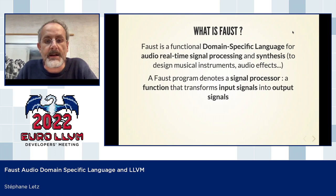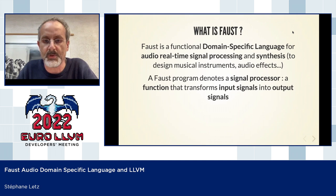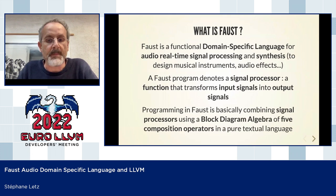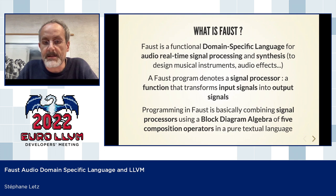Signals can also be control signals with a specific value at a specific point in time. A Faust program describes the signal processor — the mapping and transformation of input signals into output signals. This is done in Faust using a block diagram algebra of five main composition operators. It's a pure textual language, so as a programmer you describe a block diagram using this algebra.